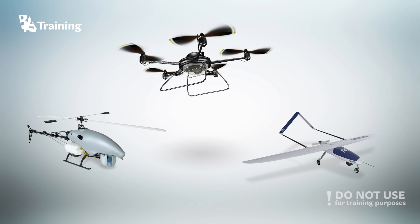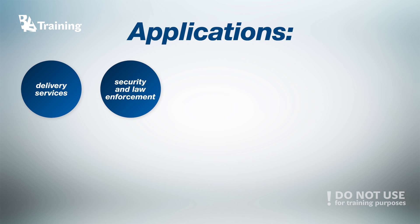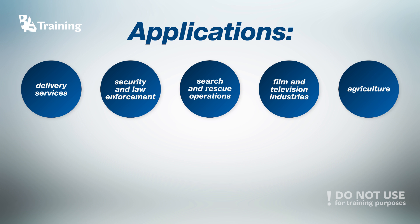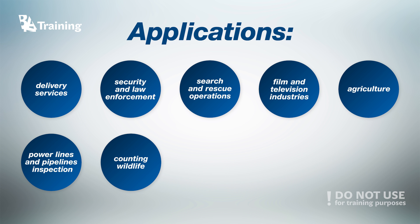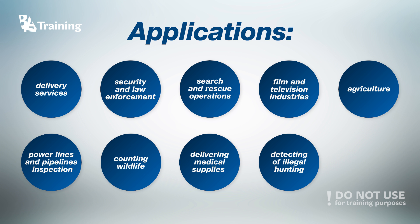Now you know the differences between all these types of drones. Let's talk about the practical use of UAVs today. Used only in military and spatial operation applications in the past, drones are now increasingly finding uses in civil applications. Drones are now widely used for common delivery services, security and law enforcement, search and rescue operations, film and television industries, agriculture, and power line and pipeline inspections. And more unusual activities like counting wildlife, delivering medical supplies to remote or otherwise inaccessible regions, detecting illegal hunting, and many many others.